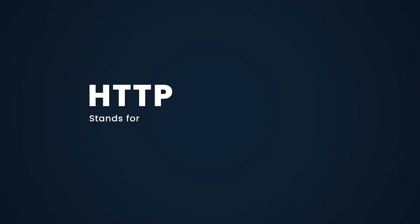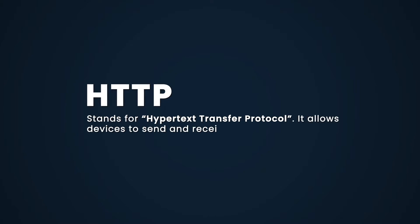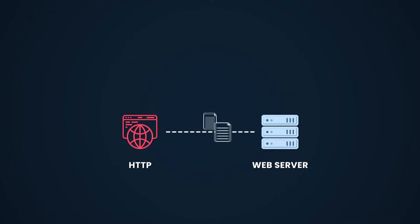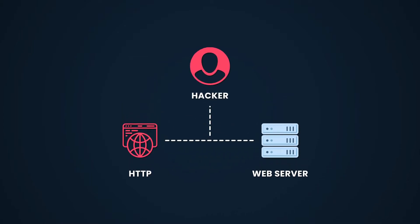Let's take HTTP as an example. HTTP stands for Hypertext Transfer Protocol. It allows devices to send and receive information on the World Wide Web. Your web browser sends a request to the website's server, and the server sends a response back. A major drawback of HTTP is that it sends information in plain text, so anyone who wants to can intercept your message midway and read what it says. That means basic HTTP proxies have a lot of security risks, especially if you're working with sensitive data.